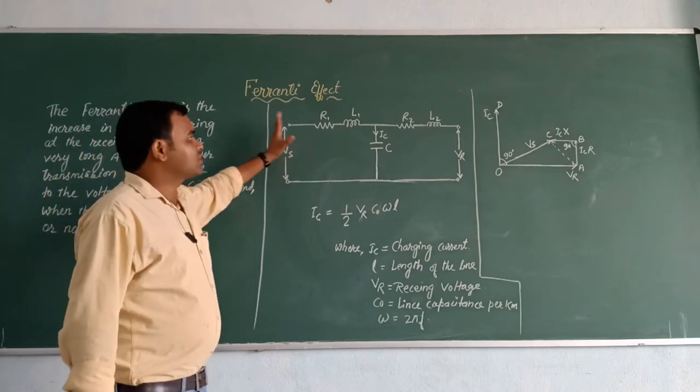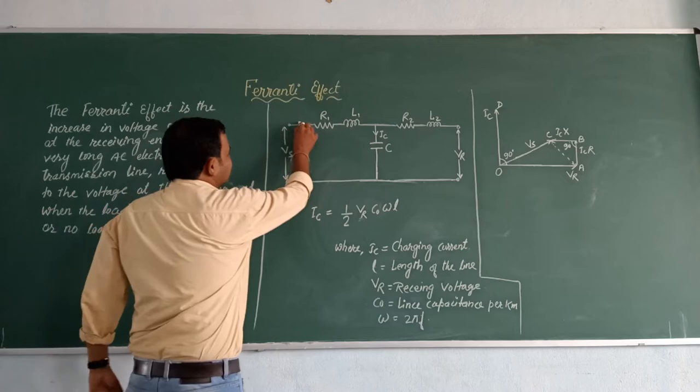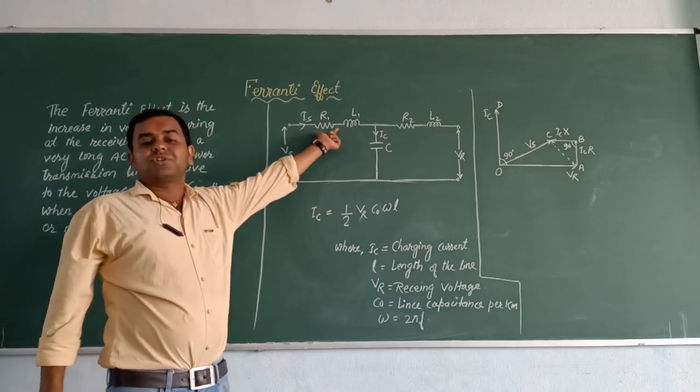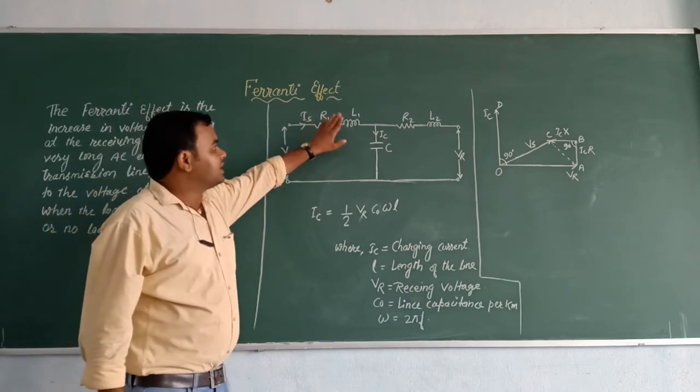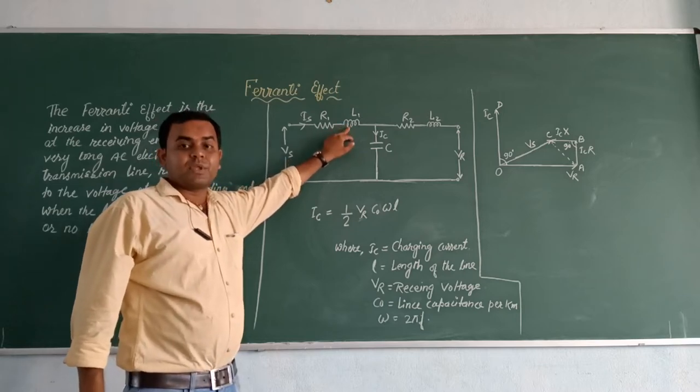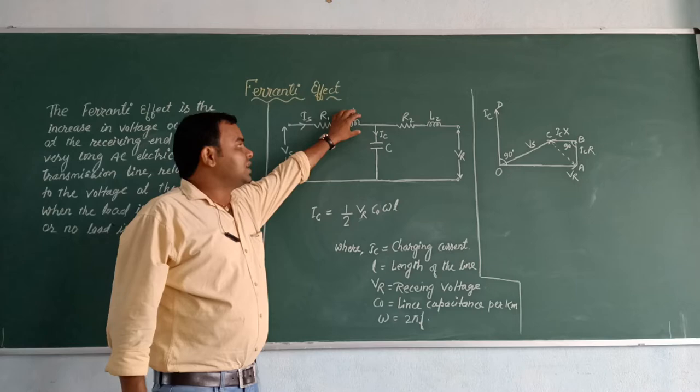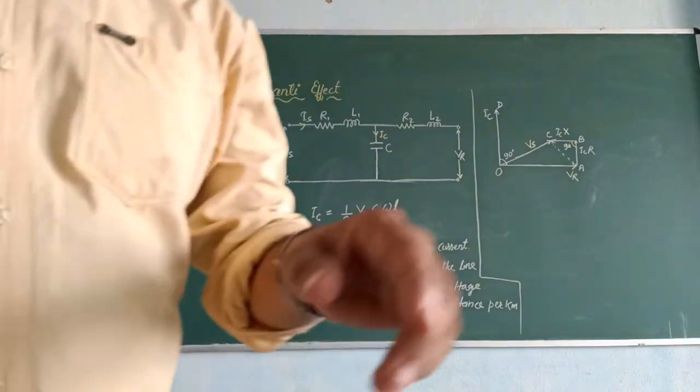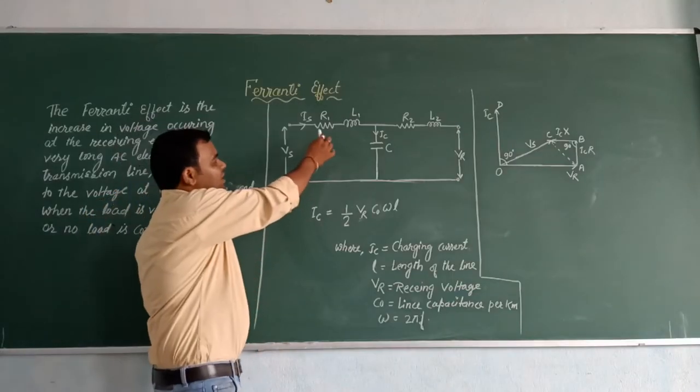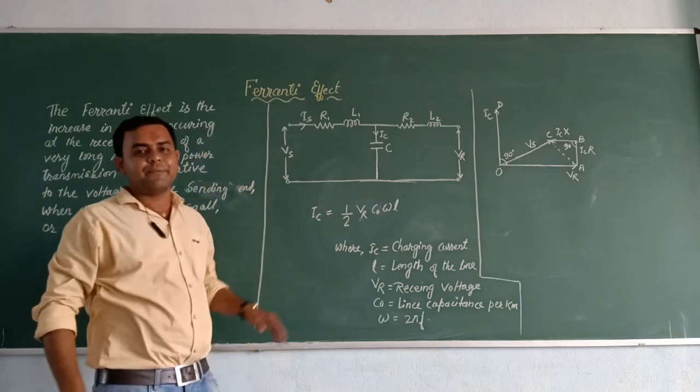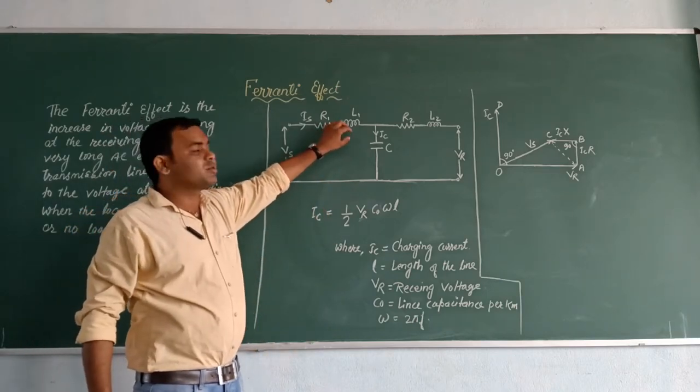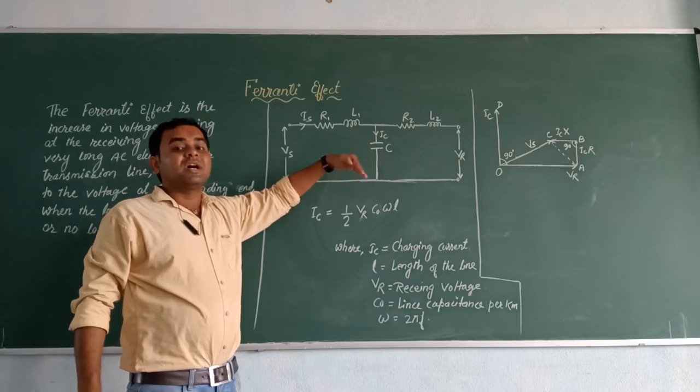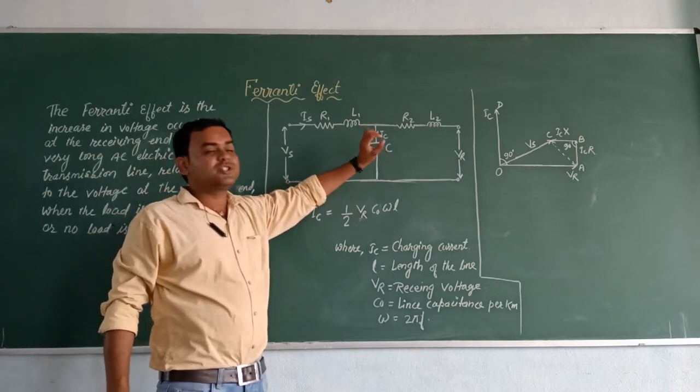When we supply the voltage, current flows. This is the sending current. At R1 there is a voltage drop. Then here is the inductance. Here is the charge, and there is voltage drop. This is an inductive circuit, so this is the voltage drop.